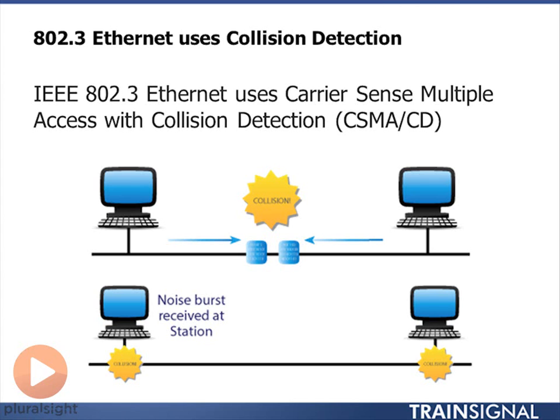In this example, I've got two stations and they happen to transmit at the same time. They both listen to the wire and go, 'I can't hear anything — the wire is clean, there's no voltage shift on it, let me go ahead and transmit.' And in this example, two stations happen to transmit at the same time, so there happens to be a collision.